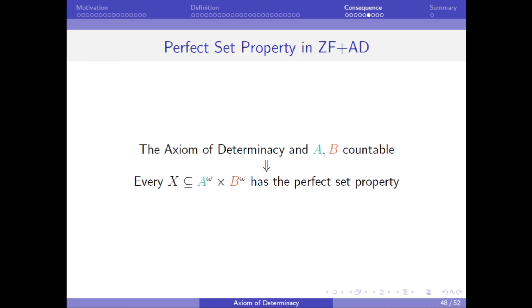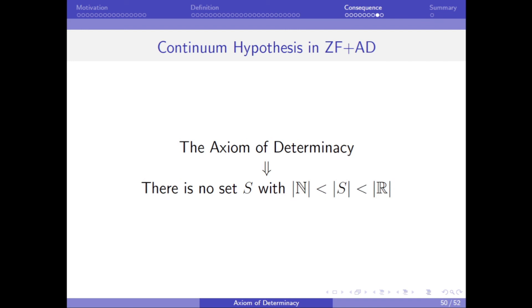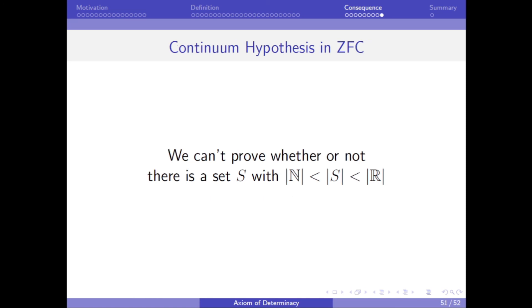And the axiom of determinacy implies that if A and B are countable, then every set of plays has the perfect set property. And this is a desirable consequence, because of its relation to a statement about sets called the continuum hypothesis. In particular, this consequence of the axiom of determinacy can be used to show that there is no set with cardinality strictly between that of the natural numbers and that of the real numbers. And this nice result in ZF plus AD is important, because this result does not hold in ZFC. In fact, in ZFC we cannot prove whether or not such a set exists. And thus overall we have given a possible advantage of ZF plus AD over the more popular ZFC.